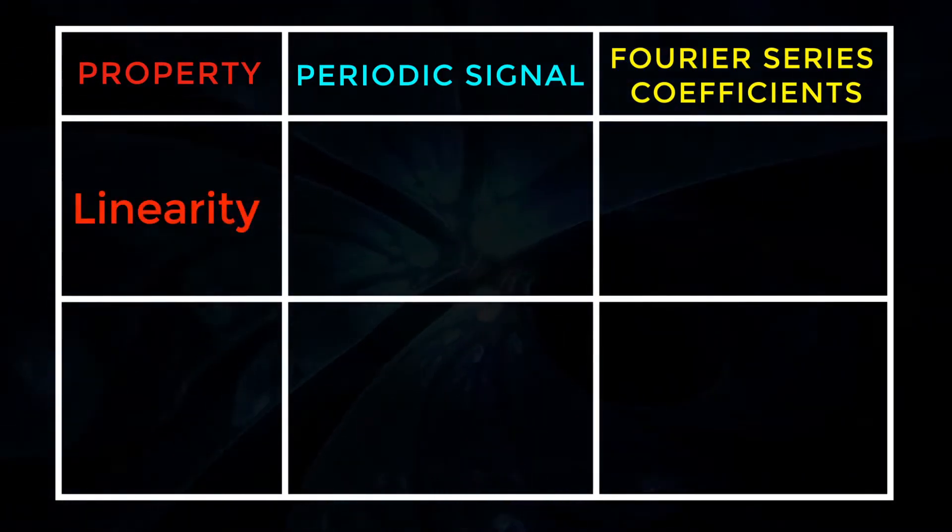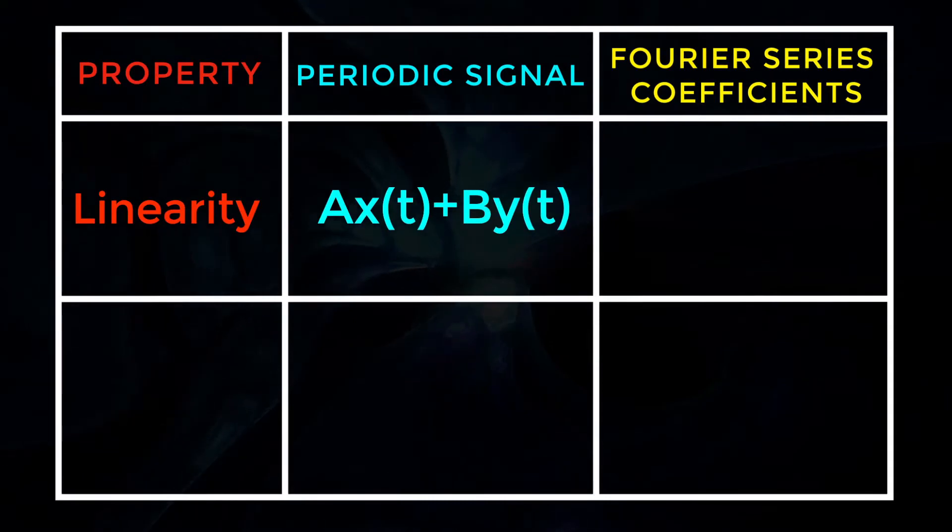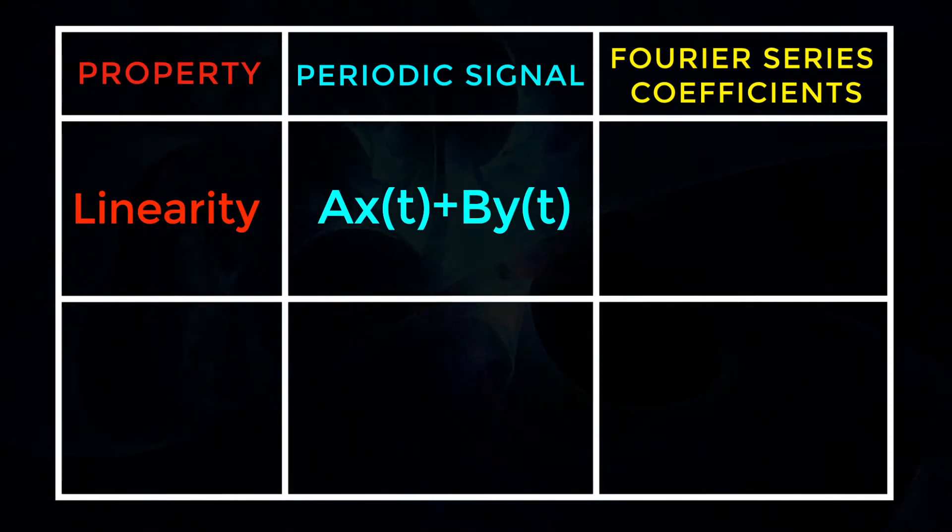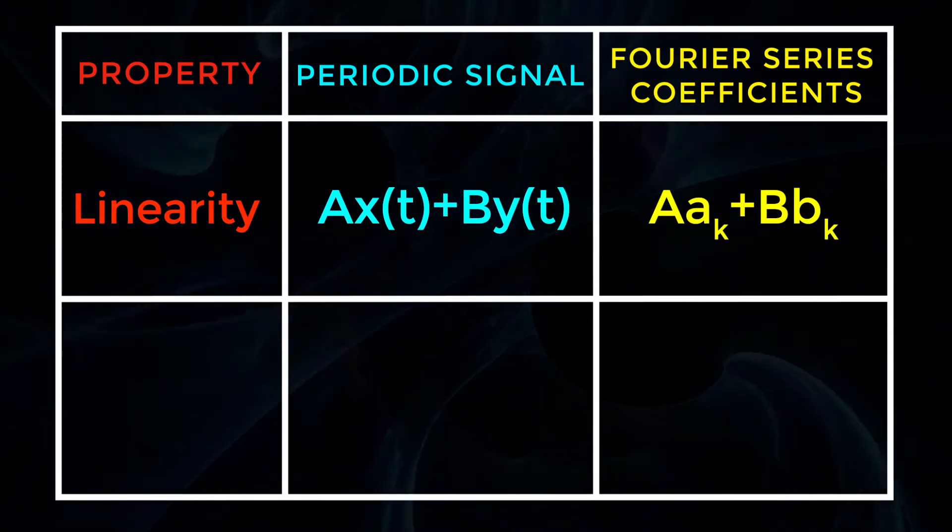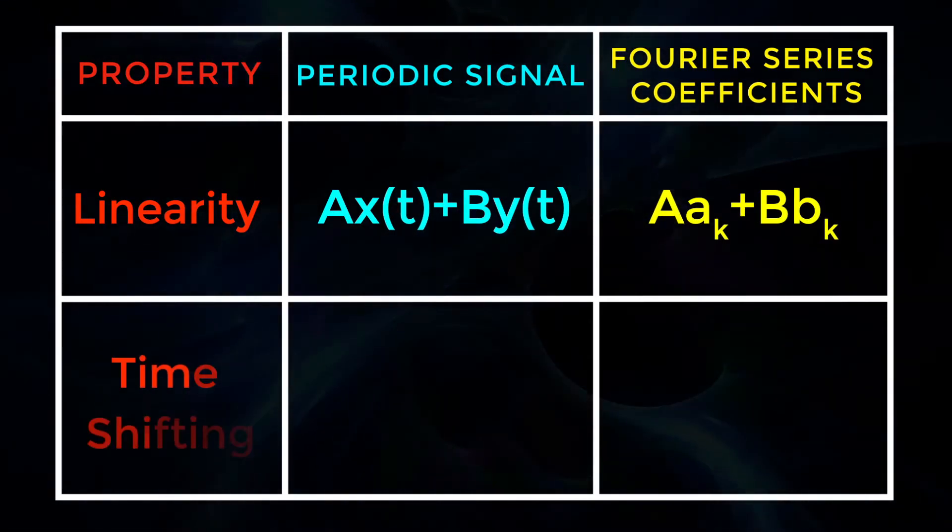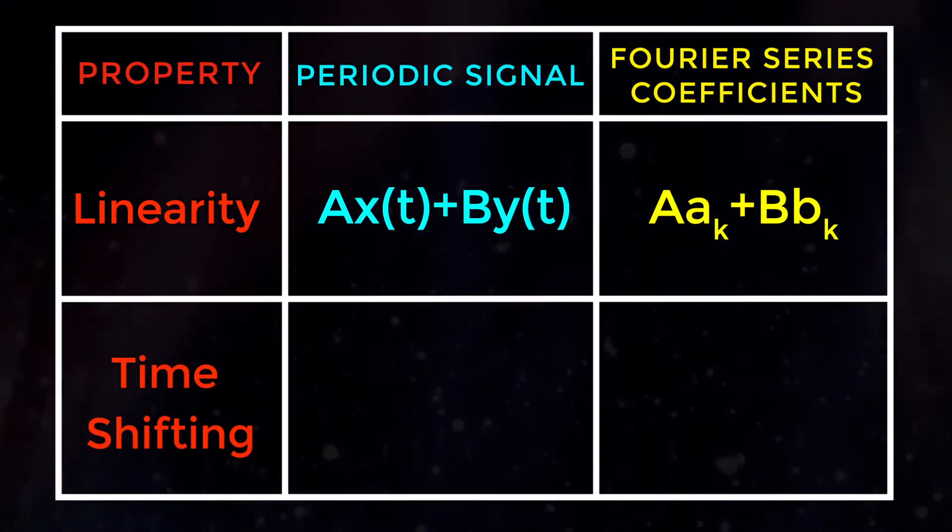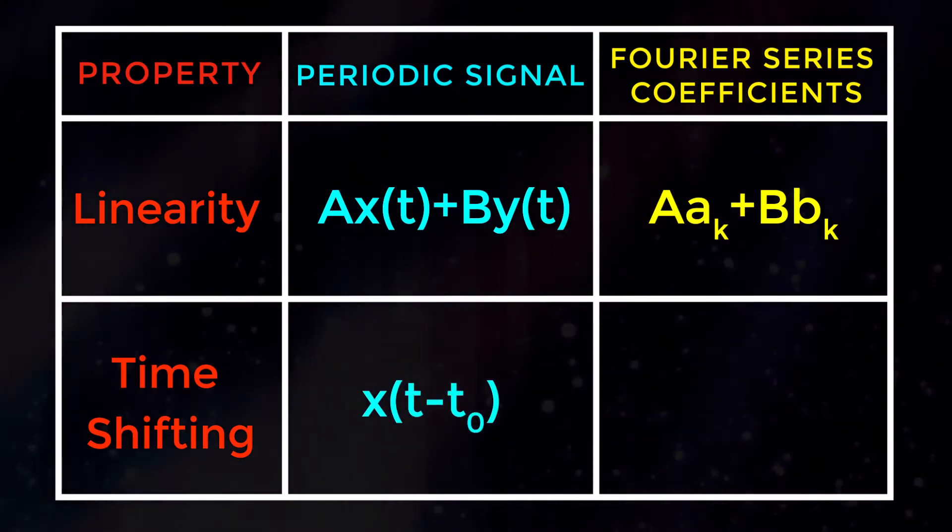Linearity: For periodic signal A into X of t plus B into Y of t, Fourier series coefficients are A into ak plus B into Bk. Time shifting: Periodic signal X of t minus t0.